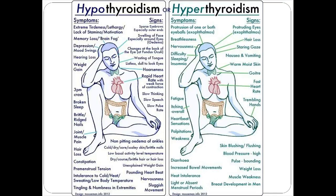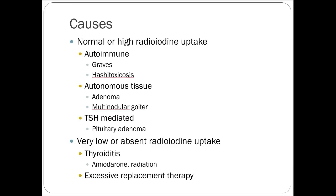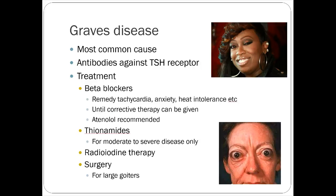For causes of hyperactive thyroid: if the thyroid shows normal or high radioiodine uptake on imaging, it points toward autoimmune disease or tumor — Graves' disease being the more common autoimmune cause. If the thyroid shows no iodine uptake, it suggests an inflammatory process, such as damage from prior radiation therapy, long-term amiodarone use, or excessive unmonitored replacement therapy doses.